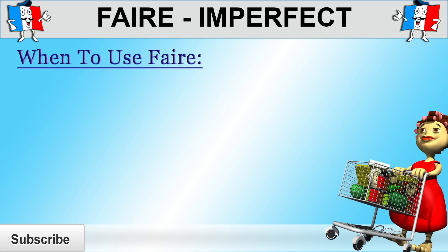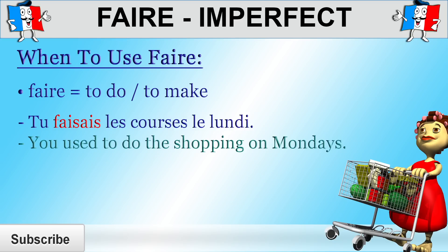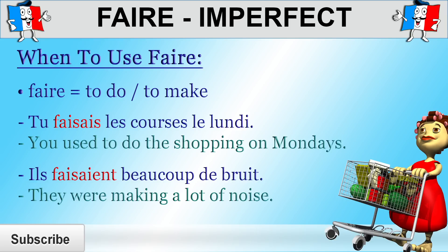So when should you be using the verb faire? Faire usually means to do or to make, but you can only use it if what you mean is that you are doing something or making something. To use faire to mean to do or to make, it needs to be followed by a noun. For example, tu faisais les courses le lundi — you used to do the shopping on Mondays. Ils faisaient beaucoup de bruit — they were making a lot of noise.